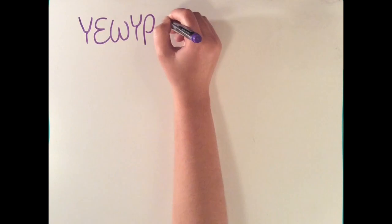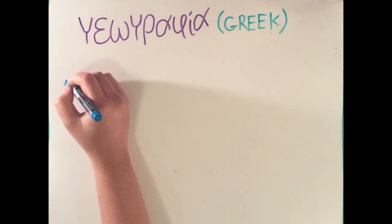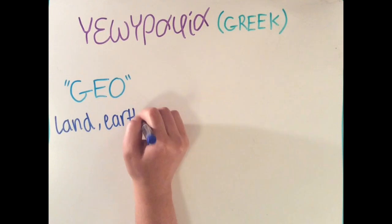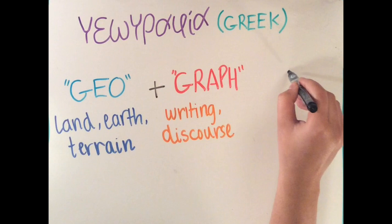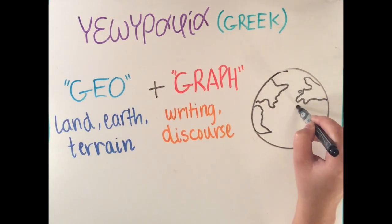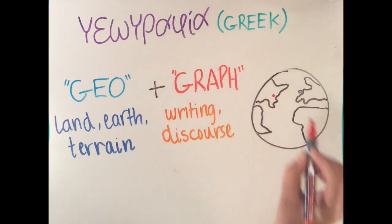So what is geography anyways? The word geography has its roots in the Greek language. The prefix geo means land or the earth, and graph means discourse or to write. When put together, it literally means earth description.